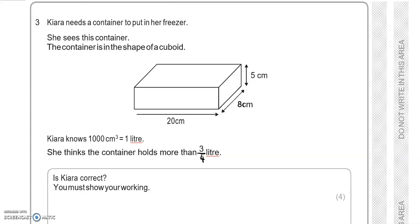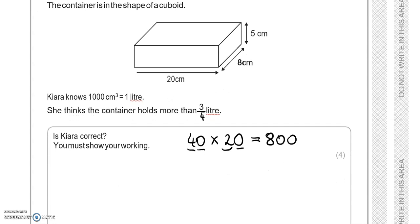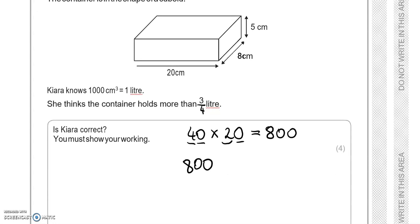Let's work out the volume of the cuboid first. So we're going to do 5 times 8 which is 40 times 20. 4 times 2 is 8, add the two zeros, that makes 800. So 800 is more than 3 quarters of 1000, because 3 quarters of 1000 is equal to 750. So 800 is higher than that. So that is correct.